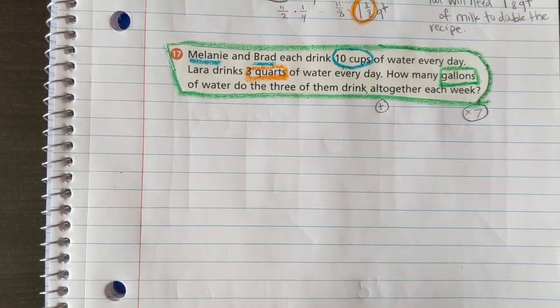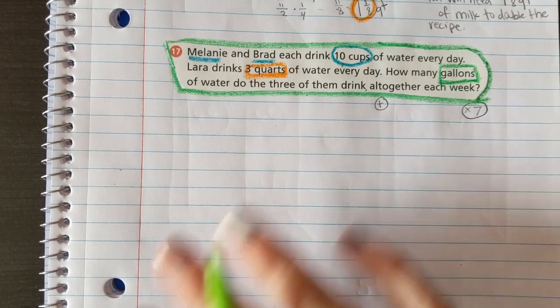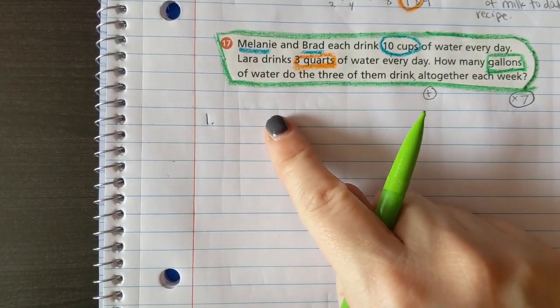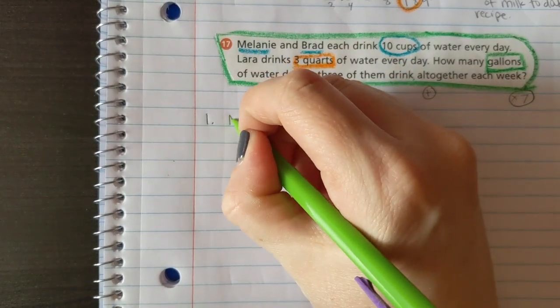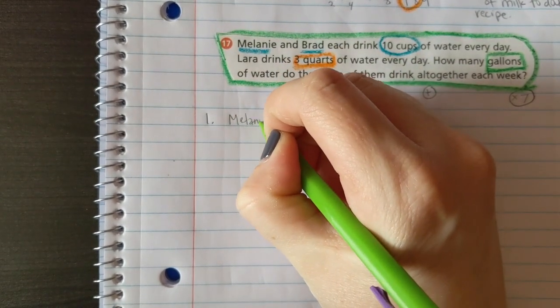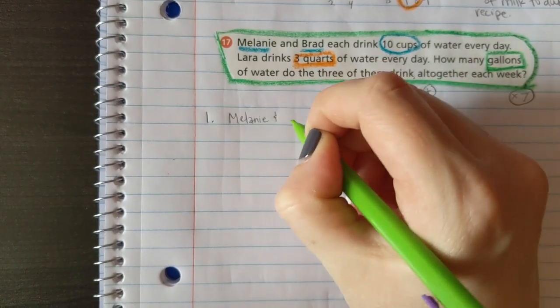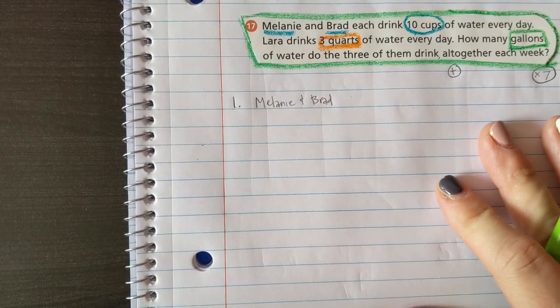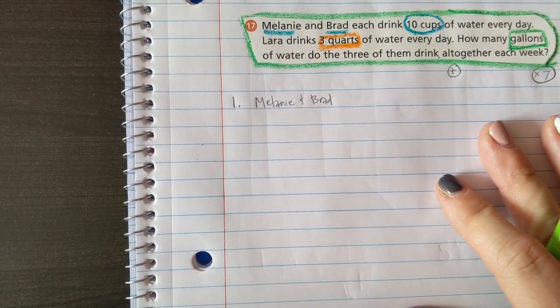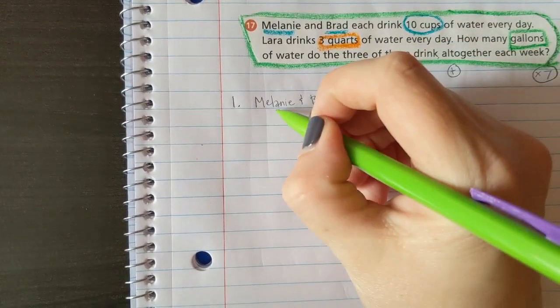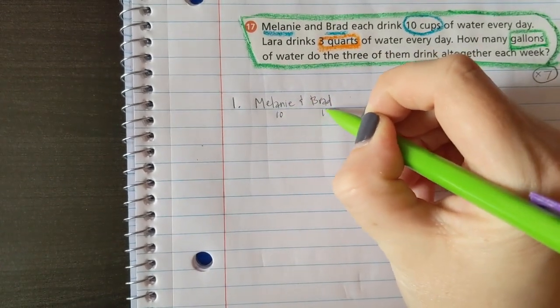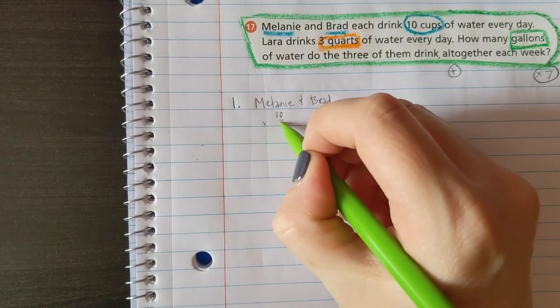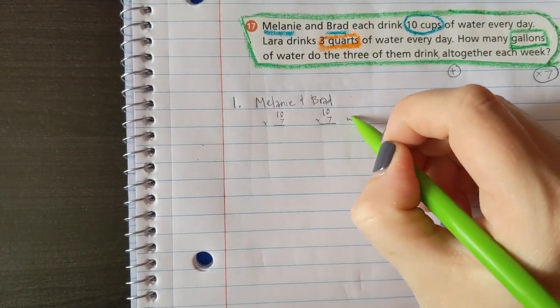Whoa, lots of steps here. Step number one, I would find out Melanie and Brad. It was really easy for me to write that name, I wonder why. Melanie and Brad, they drink 10 cups of water every day, so we're gonna find out Melanie and Brad. She drinks 10, he drinks 10 every day, so how many does she drink in a week and how many does he drink in a week?